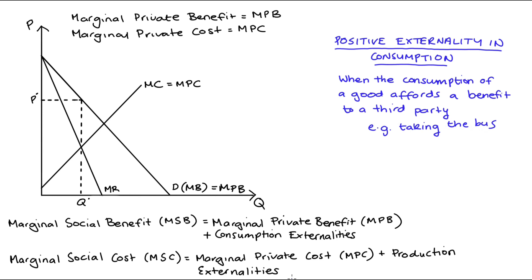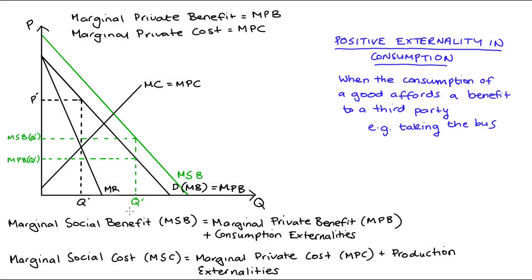Our positive consumption externality will be part of our marginal social benefit function. Because it's positive, there's an additional benefit afforded to a third party, which means visually our marginal social benefit curve lies above our demand curve — that's the green line on the diagram. For any marginal unit, say q', the private benefit to the consumer is read from the demand curve, the marginal social benefit is read from the MSB curve, and the gap between those two levels is the value of the external benefit associated with consuming q'. That's how we incorporate externalities into our market diagrams.